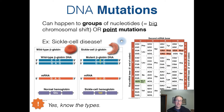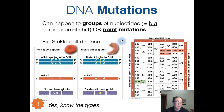We've already seen an example of a point mutation when we were learning about sickle cell disease. In sickle cell disease, there's a single nucleotide that differs between the beta globin molecule for wild-type individuals and the beta globin molecule for an individual that has sickle cell.